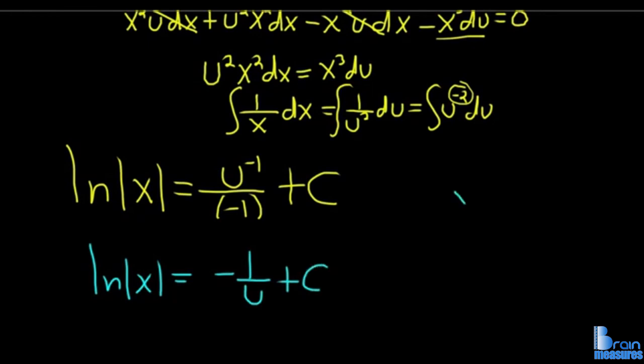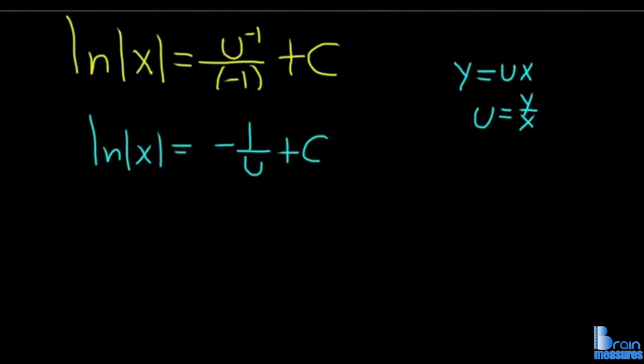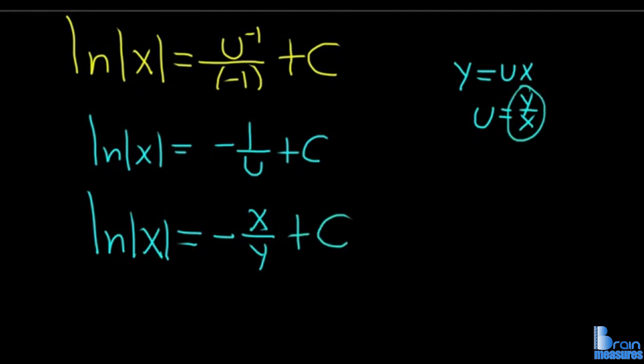We know that y = ux, so u = y/x. Therefore 1/u is x/y. So this is ln|x| = -x/y + c, and that is the final answer. I hope this video has been helpful.